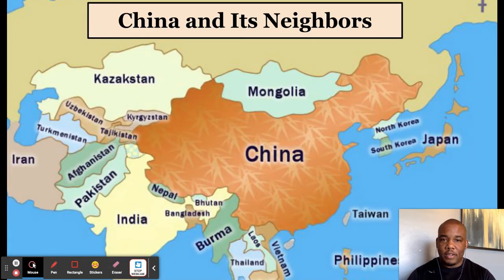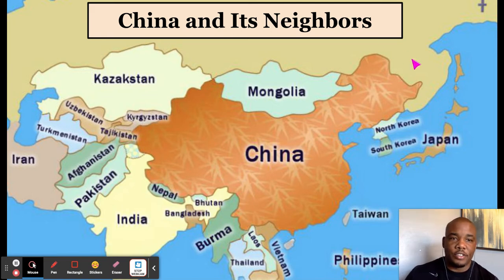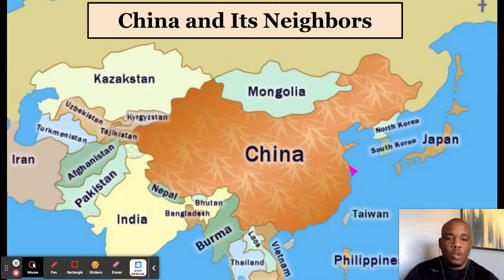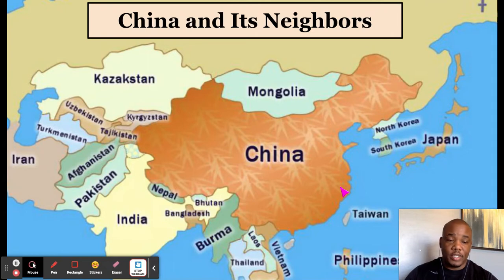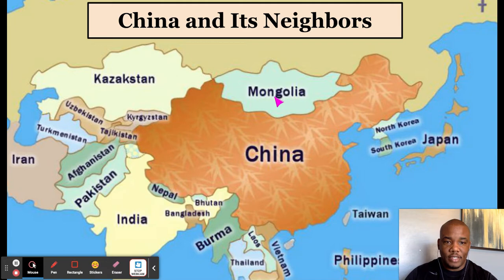We are going to talk about China and its neighbors. We're going to get into the landscape, the climate, the elevation — what the land looks like in Eastern Asia. We're dealing with three countries: China, Mongolia just north, and Russia.